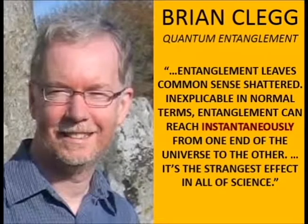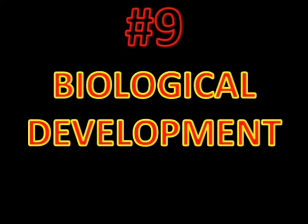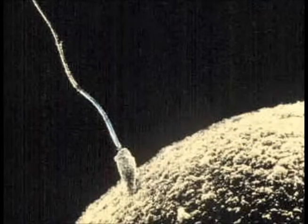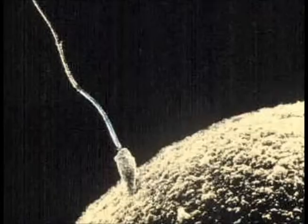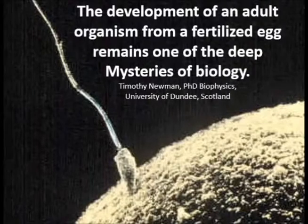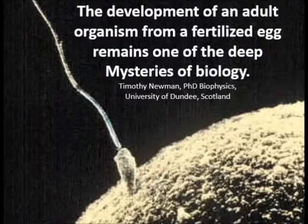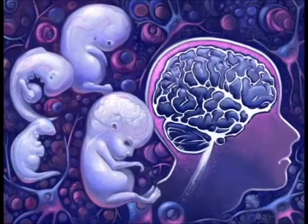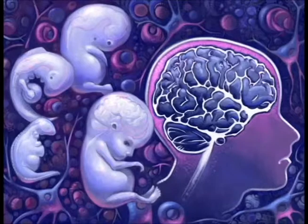Biological development. How does a single fertilized egg become something as complex as a human being? The development of an adult organism from a fertilized egg remains one of the deep mysteries of biology. This from Timothy Newman, Ph.D. in biophysics. So how does this little egg divide and divide and divide, each division creating a new generation of cells with new properties, seemingly knowing where to go, what additional things to accomplish, what their roles will be? It's a huge mystery.